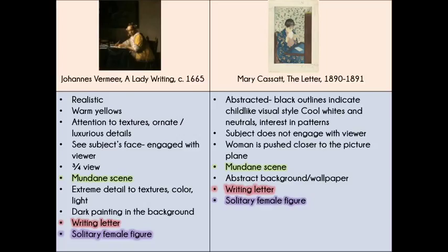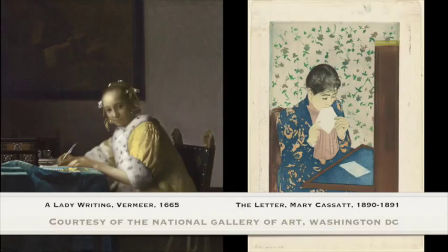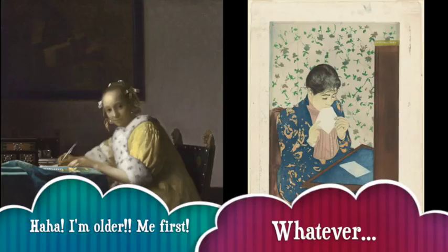The other vital thing to really be aware of is which painting chronologically came first. It's always important to start with the earliest or oldest work of art so that you don't end up making an inaccurate or false statement about the evolution of style or influence. For example, Mary Cassatt could not have influenced Vermeer unless she time traveled, so you don't want to make that mistake.